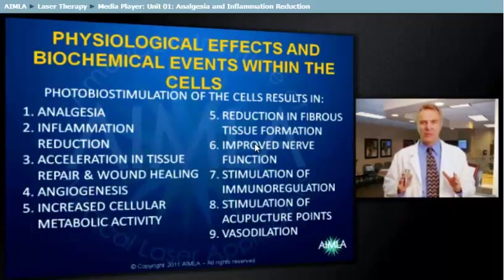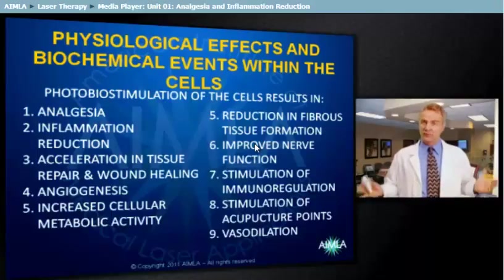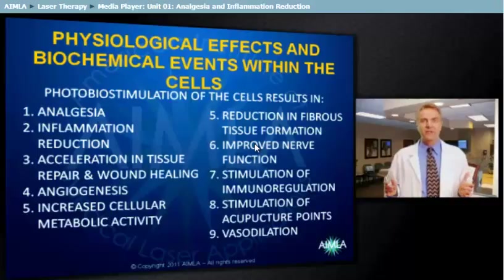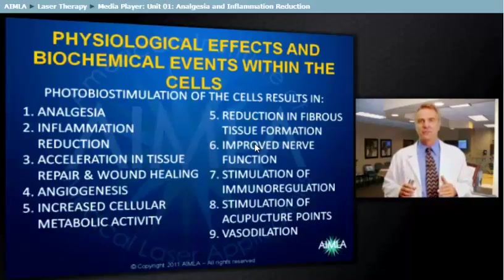Photobiostimulation of the cells causes a biochemical cascade of events within the cells that results in: 1. A relief of pain, referred to as analgesia; 2. A reduction of inflammation; 3. An acceleration of tissue repair and wound healing; 4. Improved circulation, referred to as angiogenesis; 5. Increased cellular metabolic activity; 6. Reduction in fibrous tissue formation; 7. Improved nerve function; 8. Stimulation of immunoregulation; 9. Stimulation of acupuncture points.